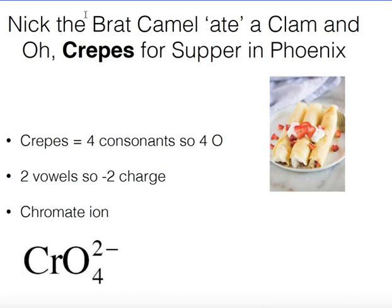For 'Kreps': take CR for chromium. Counting the consonants in 'Kreps' — K, R, P, S — there are four, so four oxygens. There are two vowels, giving a negative two charge. That is the chromate ion: CrO4^2-. If it had any other charge or number of oxygens, it would no longer be chromate.